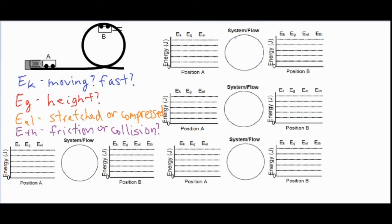The big factor is the system. We're always going to include the Earth, because you wouldn't have any gravitational potential energy without Earth's gravitational field. We also have the cart, the track, and the spring — so that's everything in the picture.